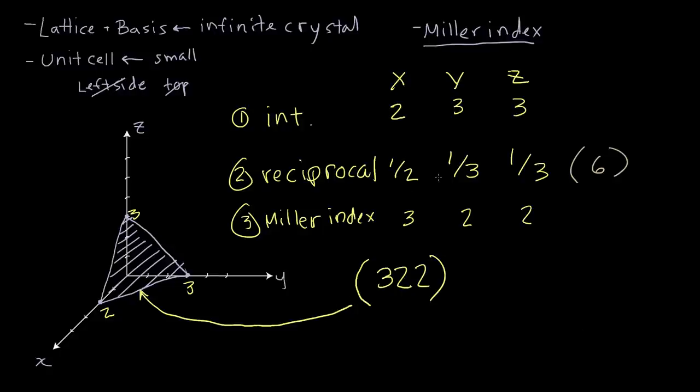And this is the procedure we would use to index any plane. The axes could go into the negative. We could have smaller values for the intercepts. We could have half values. They don't have to be integer values. And we would follow the same procedure to index any plane.